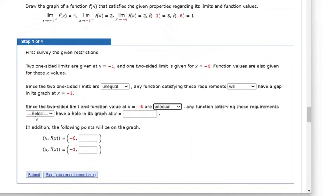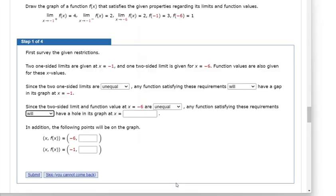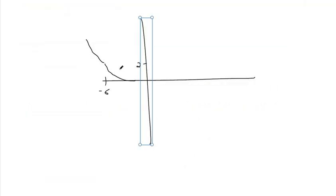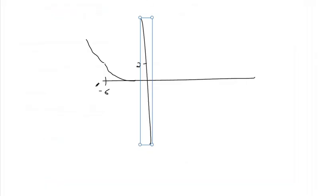Any function satisfying the requirements will have a hole in this graph at x equals negative 6. The limit exists — as you approach from the left and from the right, you're getting y equals 2. But since the exact value at negative 6 is 1, which is different from the limit, we call that a removable discontinuity — open circle right there.